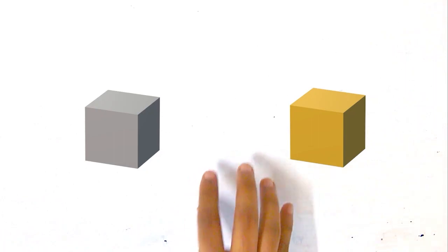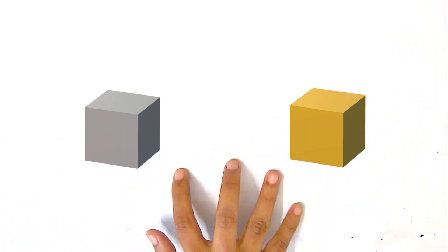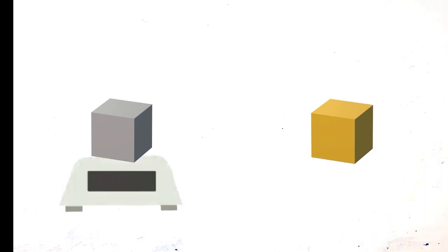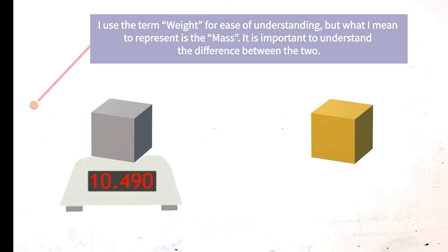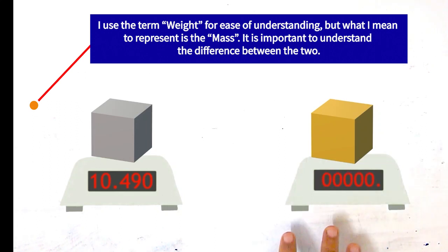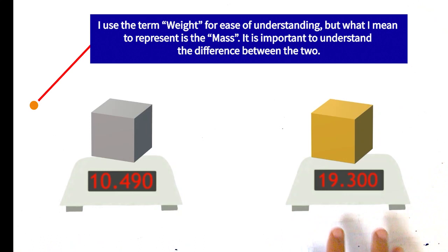So we have one question at this point. If we hold these two cubes in our hands, they will feel different weights. We start with the silver cube — its weight is 10.49 grams. And the gold cube? It is 19.3 grams.